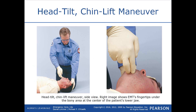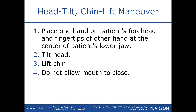Here is an example of the head tilt chin lift: you place one hand on the forehead, then two fingers under the bony prominence of the chin — not the soft tissue — and lift the chin up toward the ceiling, allowing the lower jaw to move upward and raising the tongue off the back of the throat. Place one hand on the patient's forehead, fingertips of the other hand on the center of the lower jaw on the bone. Pressing on the soft tissue may actually obstruct the airway. Tilt the head back, lift the chin, and do not allow the mouth to close.